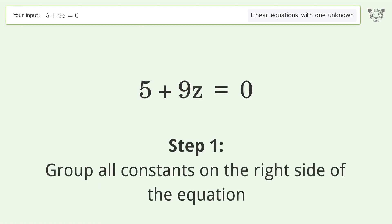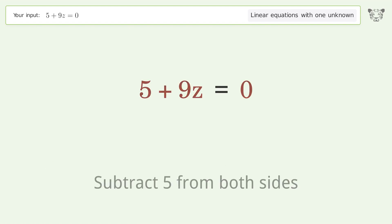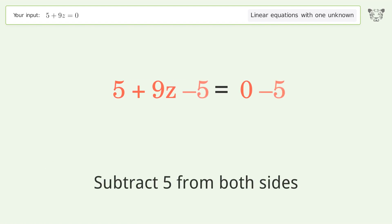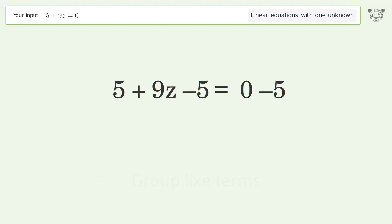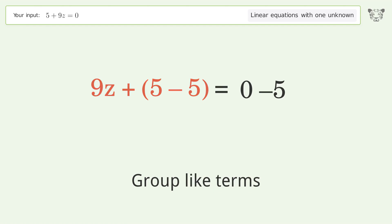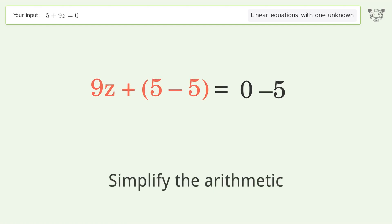Group all constants on the right side of the equation by subtracting 5 from both sides. Then group like terms and simplify the arithmetic.